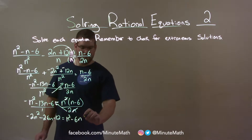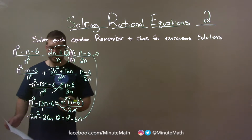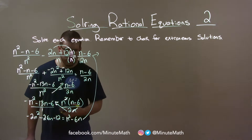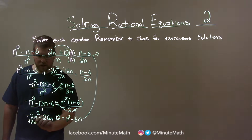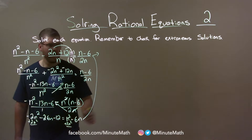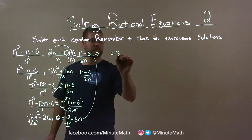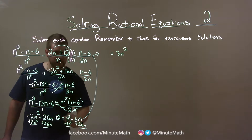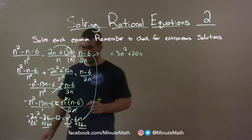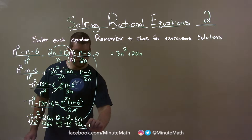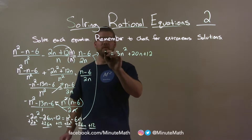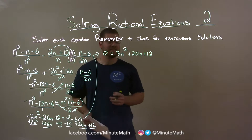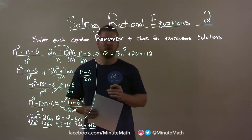I'm going to bring everything over to one side. I prefer having positive coefficients for the n squared value, so I'll bring everything to the right. Adding plus 2n squared to both sides gives 3n squared. Then adding 26n to both sides: minus n plus 26n is 20n. And adding 12 to both sides leaves 12, with 0 on the other side.